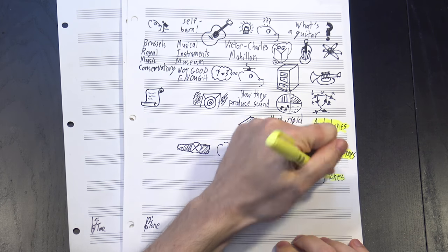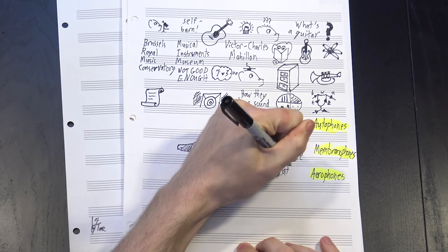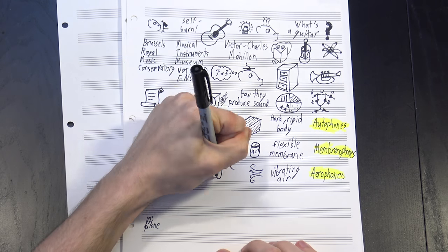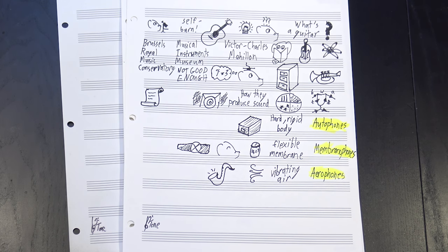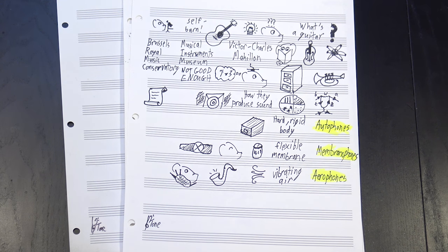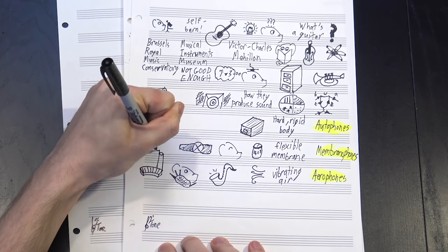The third group were called aerophones, and they made sound directly through a vibrating column of air. This includes most blown instruments, like saxophones and bagpipes, as well as a few others, like the pipe organ.